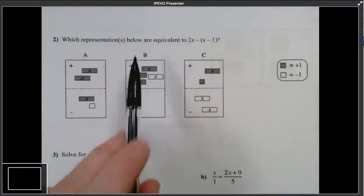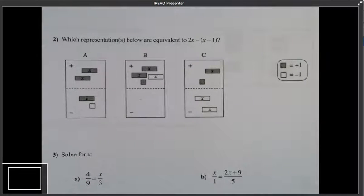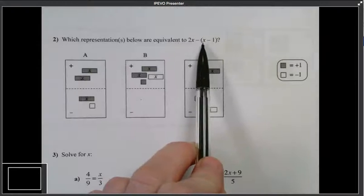All right, which representations below are equivalent to 2x minus the quantity x minus 1?